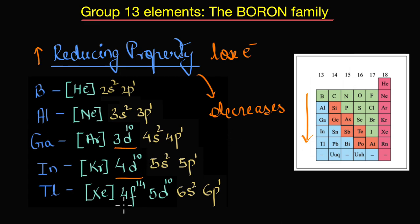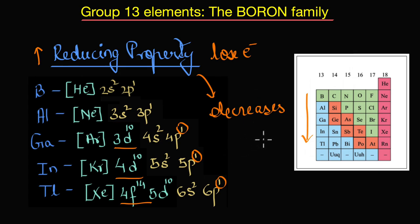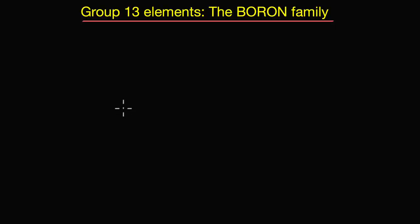If reducing property decreases, it means it becomes more difficult to lose electrons. This again happens due to the d and f electrons — because of their poor shielding effect, they help the nucleus hold on to the valence electrons strongly. This is why heavier members become reluctant to lose their electrons, showing decreased reducing property.